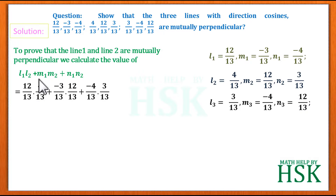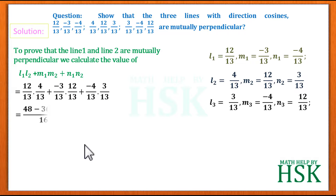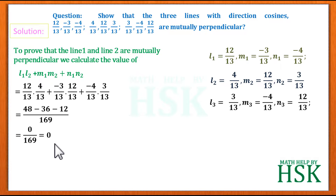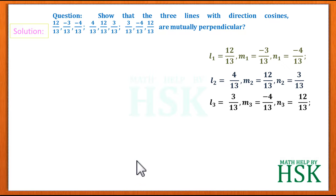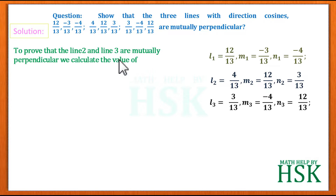The denominator is 169, and the numerator is 48 − 36 − 12 = 0. So this equals 0/169 = 0. This shows that line 1 and line 2 are perpendicular to each other.